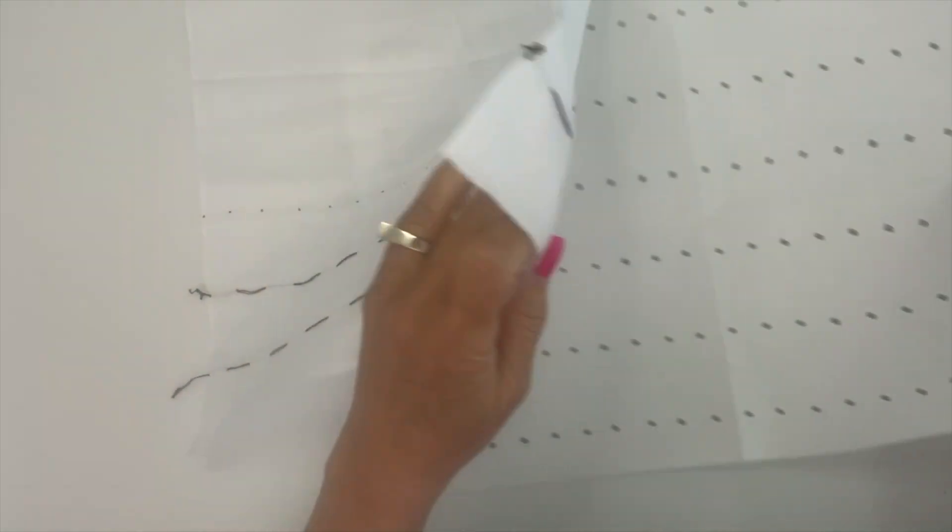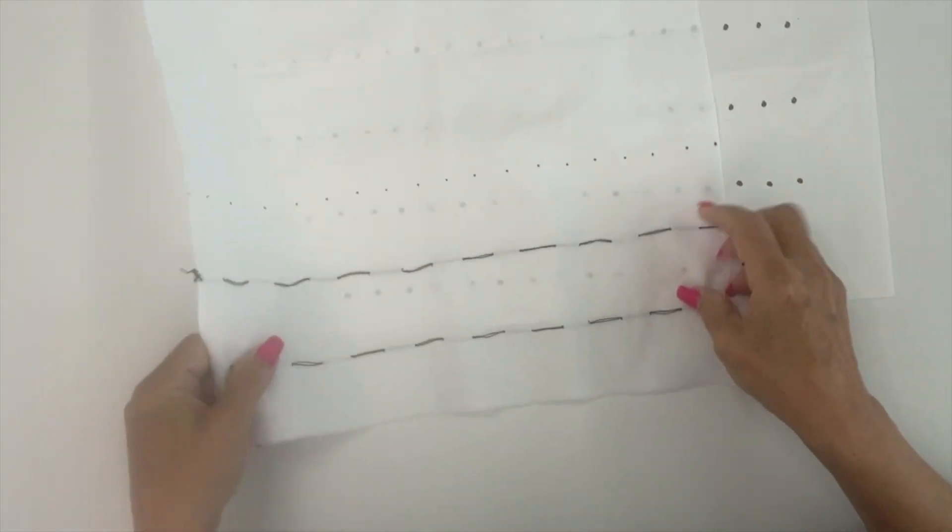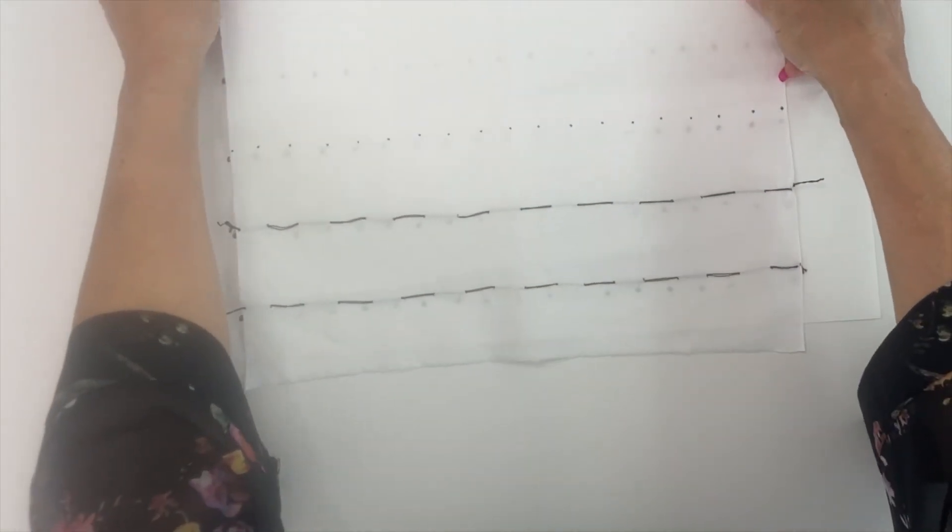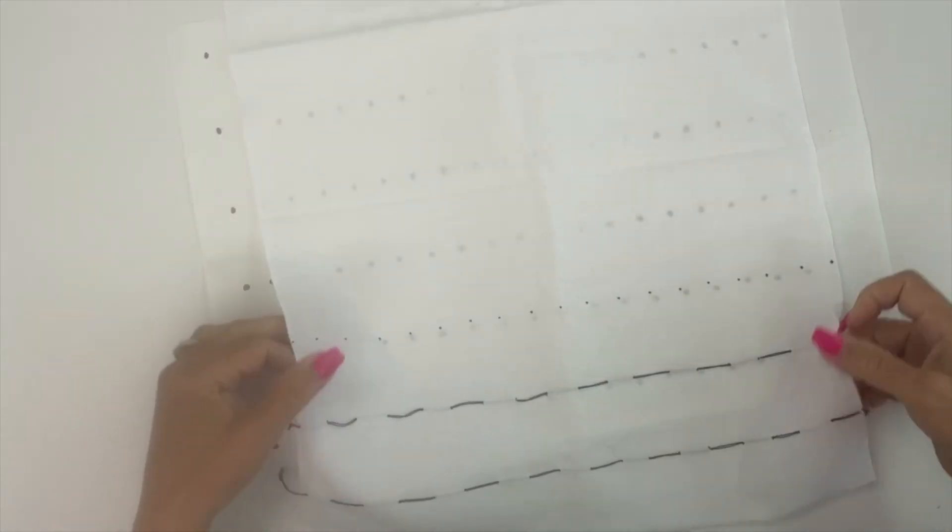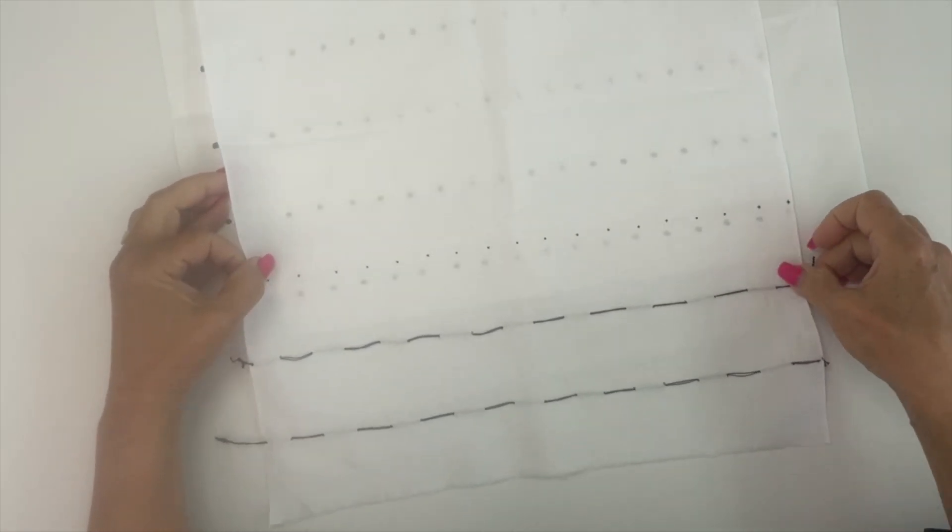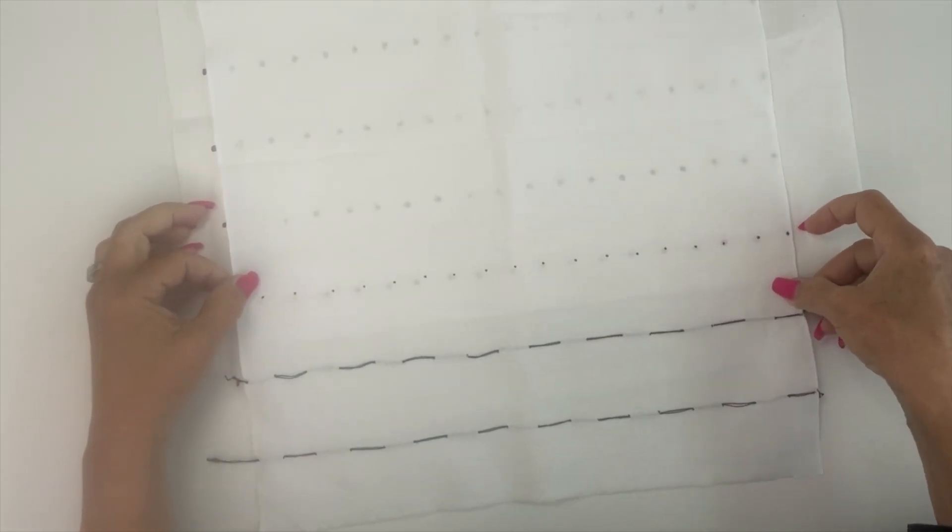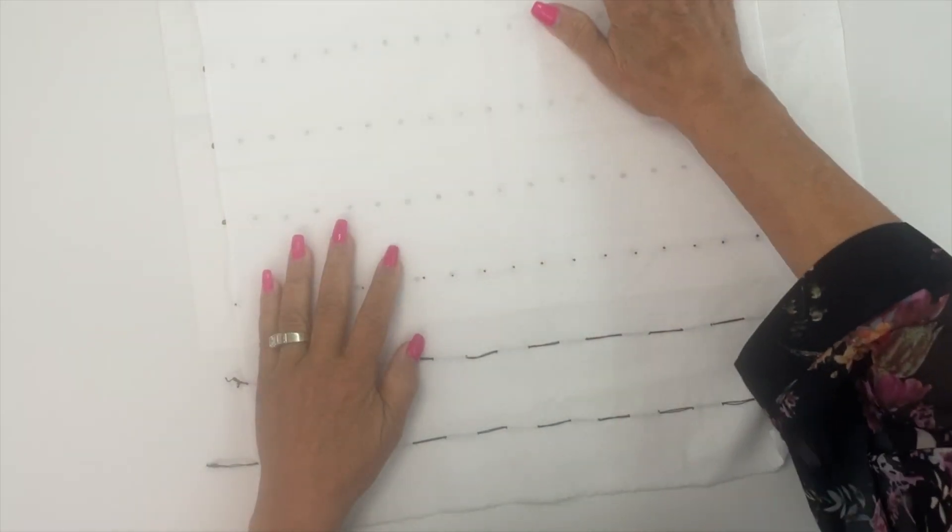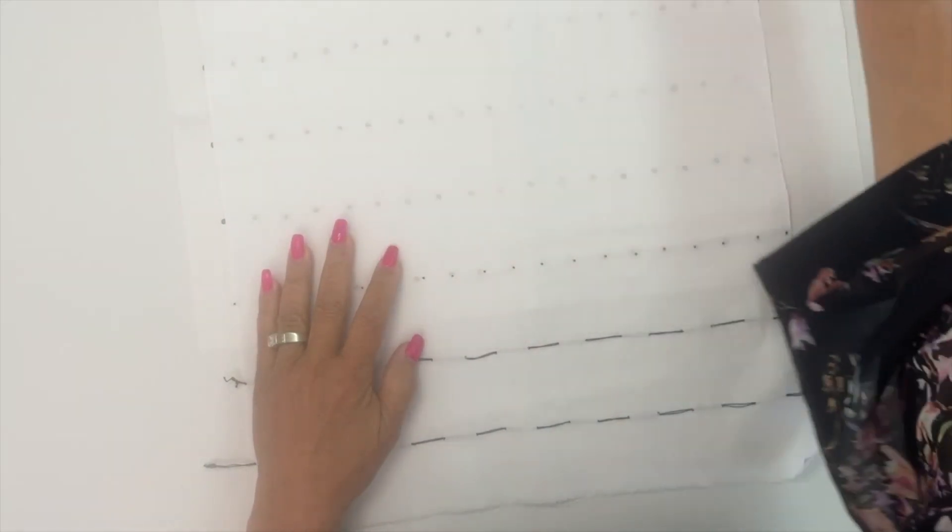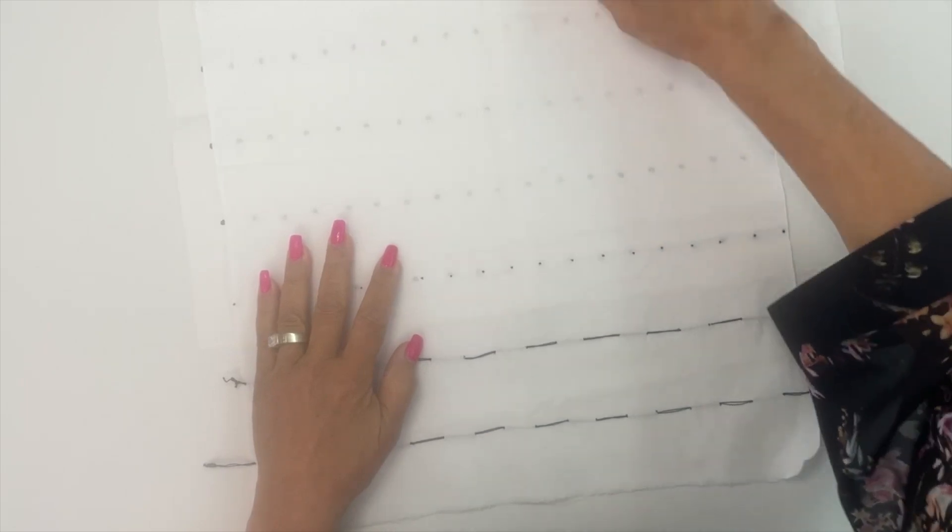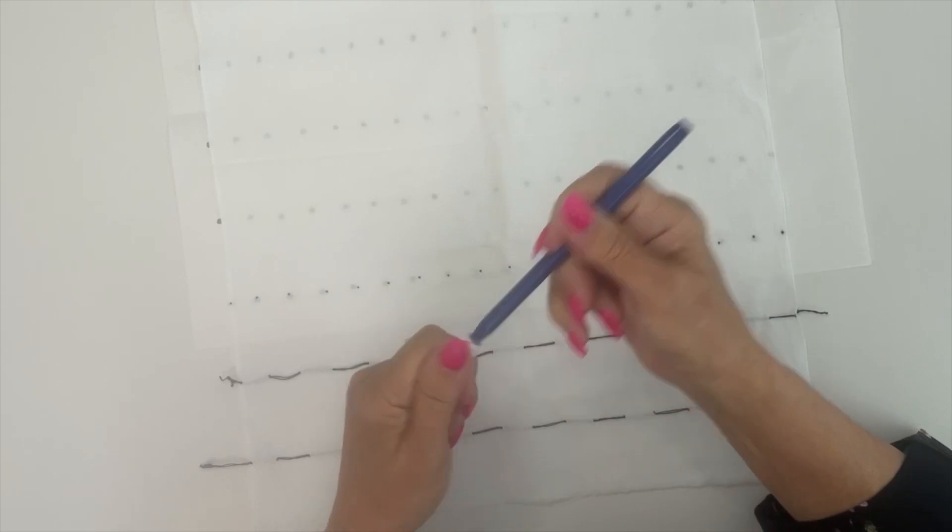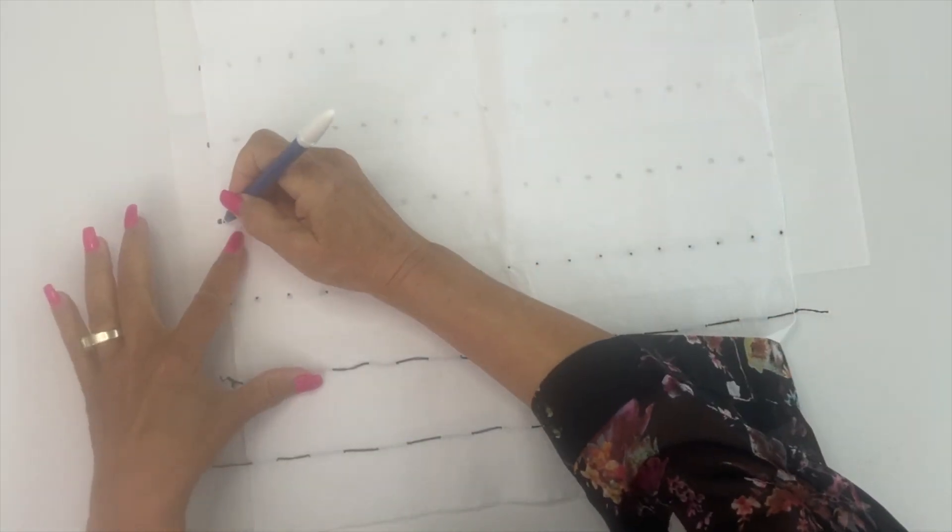I'm going to take the paper pattern that was provided and line it up with the existing dots. Then using my disappearing ink marker, which was also provided, I'm just going to make little tick marks.